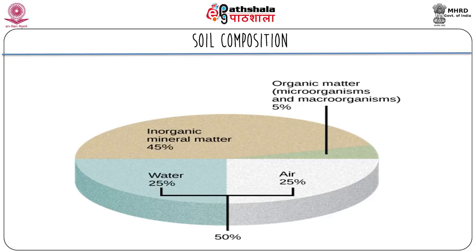A good healthy soil has sufficient air, water, minerals, and organic material to promote and sustain plant life. The organic matter of soil, called humus, is made up of microorganisms (dead and alive) and dead animals and plants in varying stages of decay. Humus improves soil structure, providing plants with water and minerals. The inorganic material of soil is composed of rock slowly broken down into smaller particles that vary in size, as shown in the figure.